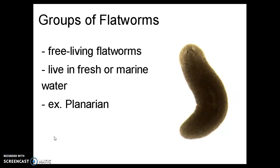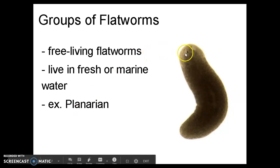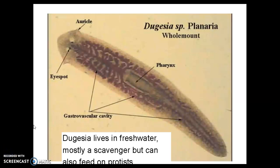There are different groups of flatworms. Free-living flatworms, like this planarian, live in fresh or marine water, and you can see the little eye spots make them look cross-eyed. The one we are going to look at is a brown planaria known as Dugesia. They live in fresh water and are mostly scavengers, but can also feed on protists like amoebas floating in the water.